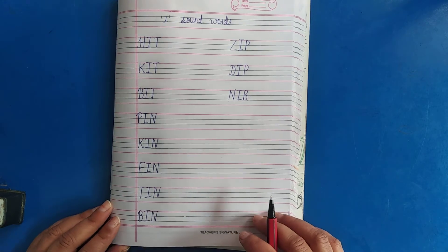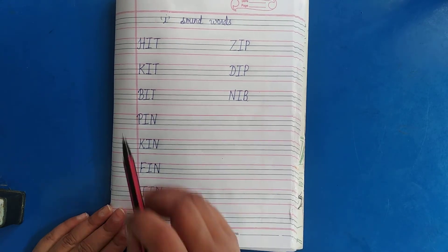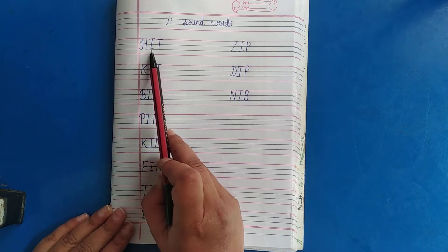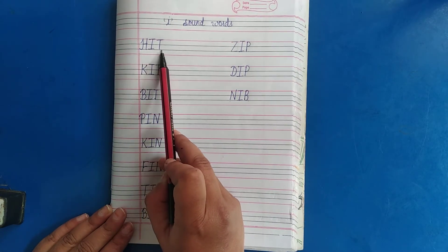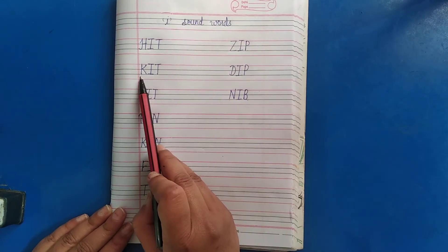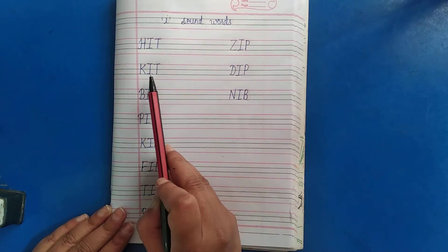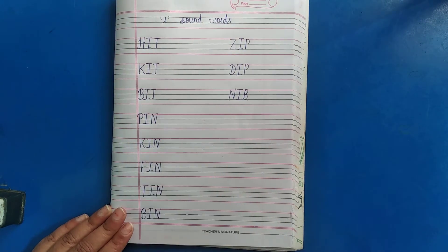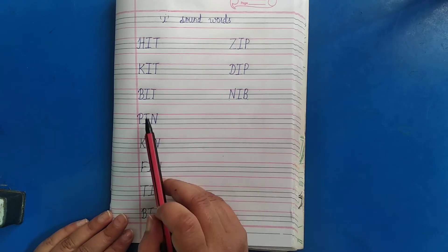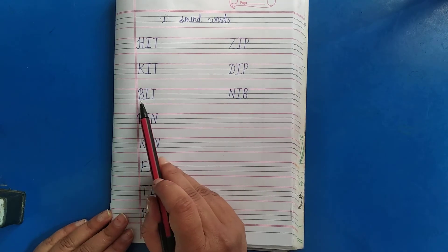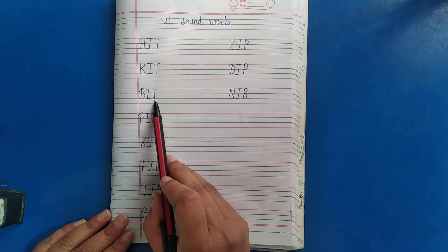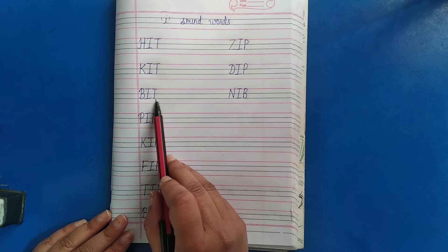Okay students, we will revise it once again. H. I. T. Hit. K. I. T. Kit. B. I. T. Bit.